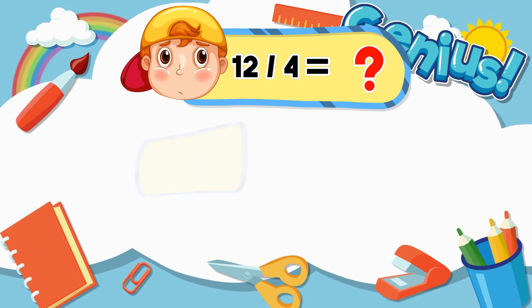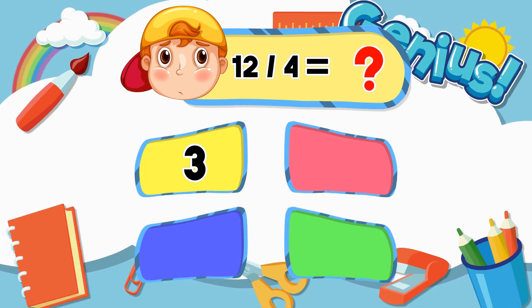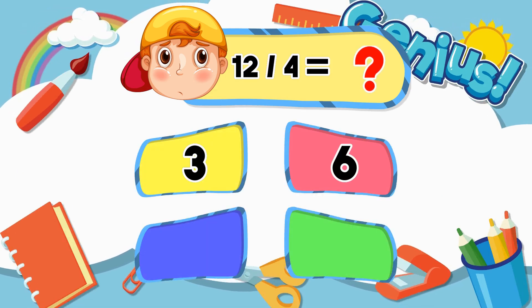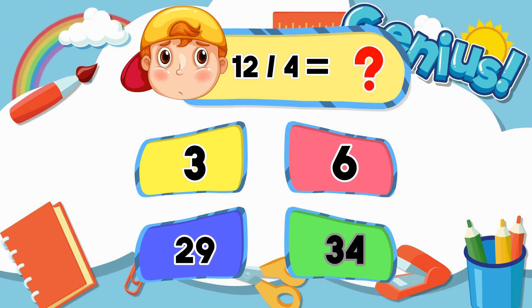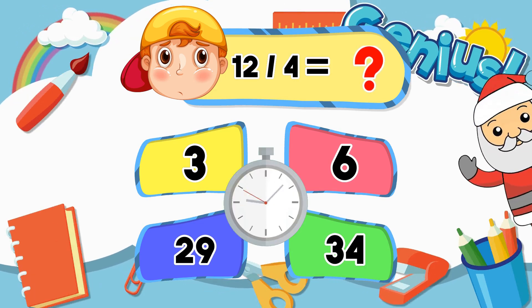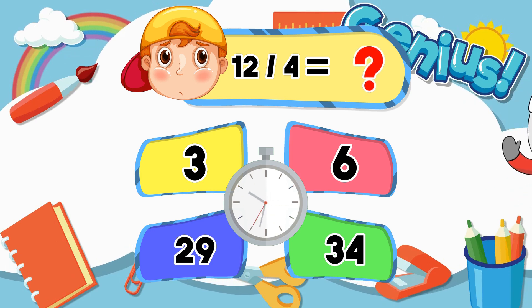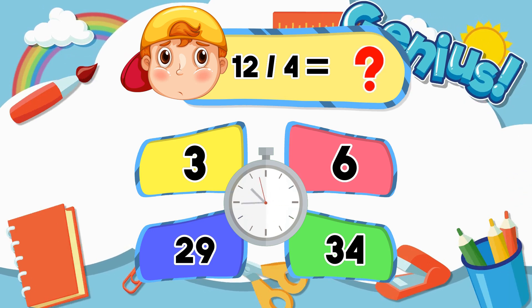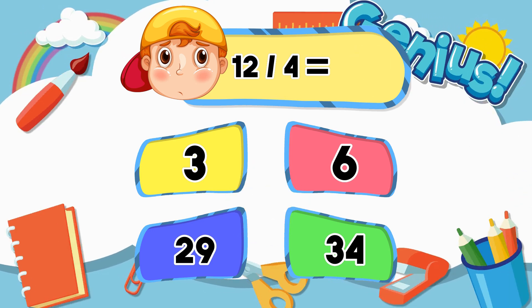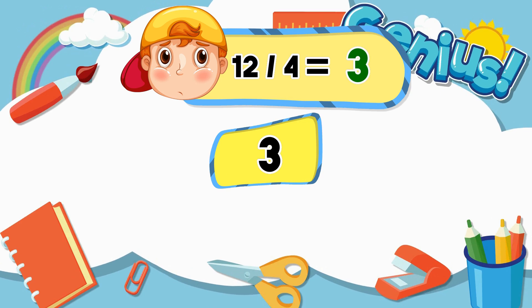What is 12 divided by 4? Options: 3, 6, 29, 34. The answer is 3.